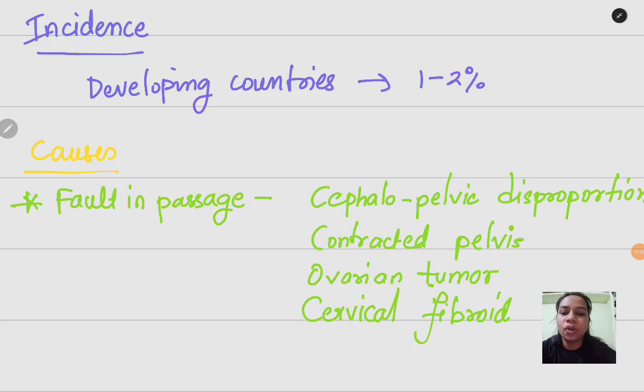Fault in the passage, so this is fault in the mother's passage. That is cephalopelvic disproportion, so the baby's cephalic part and the mother's pelvic part is not proportionate. Second is contracted pelvis. When the mother's pelvis is contracted in such a size that the baby's head cannot move further during the process of labor.